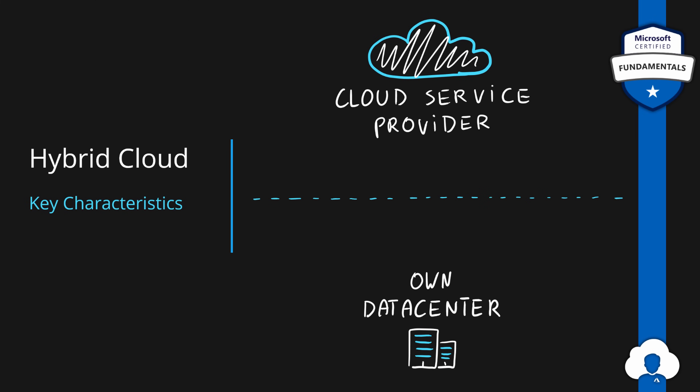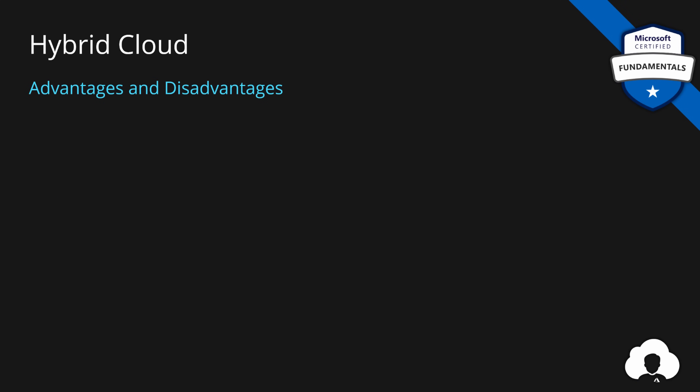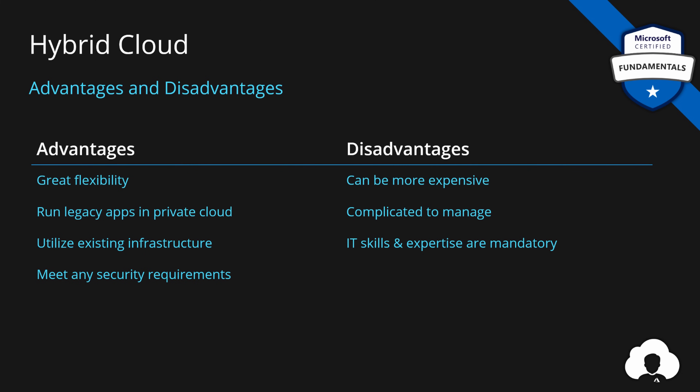This brings us to the third model: hybrid cloud. In this model you take advantage of both public and private cloud, connecting them together to provide the greatest flexibility of the three options. The obvious advantage is great flexibility. Beyond that, you can run legacy applications in your private cloud, utilize existing infrastructure, and meet any security requirements, while moving everything else to the public cloud to take advantage of all its benefits. The disadvantages are that a bigger environment consisting of both public and private cloud may be more expensive and is definitely more complicated to manage, putting a bigger strain on the skills and expertise of your internal IT teams.